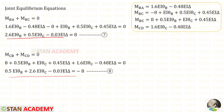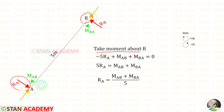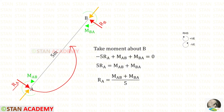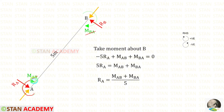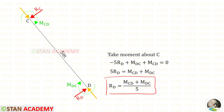We have two equations but need one more. Let us take inclined member AB and find the reaction R_A. We assume moments M_AB and M_BA act in the clockwise direction, giving R_A = (M_AB + M_BA) / 5. Similarly, for member CD, assuming M_DC and M_CD act clockwise gives R_D = (M_CD + M_DC) / 5.